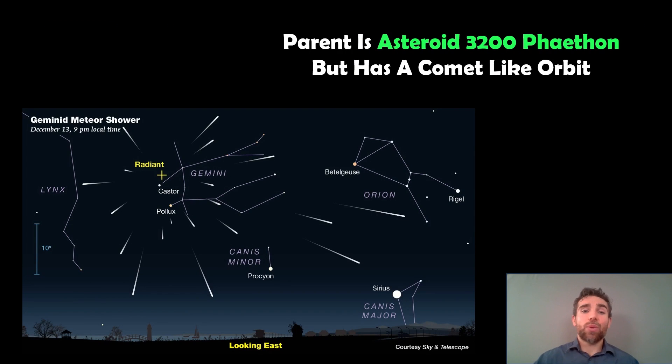The Geminids is actually caused by the asteroid 3200 Phaethon. This is an asteroid, but it's actually got a comet-like orbit. So it's not a comet, but it moves like a comet and it behaves a little bit like a comet. So it's kind of a bit of a crossover and a bit of a weird object. But anyway, it's the comet-like orbit which is responsible for creating the meteor shower. And this is the one responsible for the Geminids meteor shower.